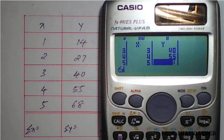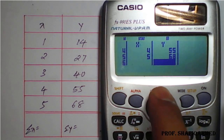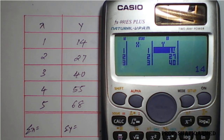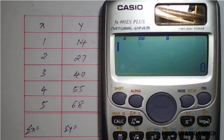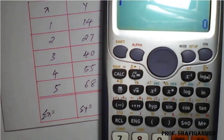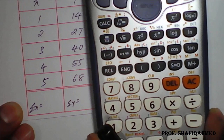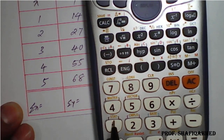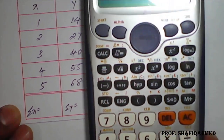Enter the Y values as per the table: 14, 27, 40, 55, and 68. You can cross-check using the center cursor button to verify that the X and Y values entered match the question. Once confirmed, press the AC button to clear the screen.